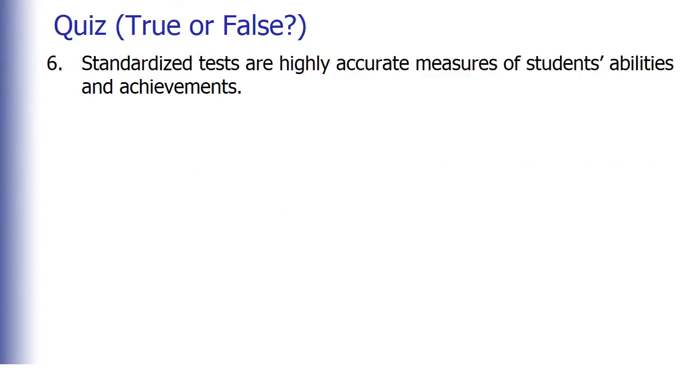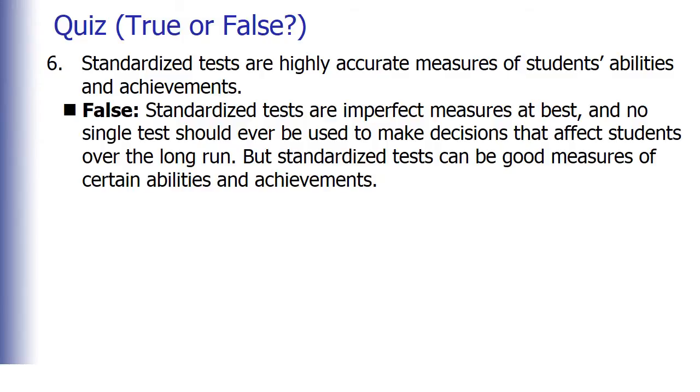And finally, number six: standardized tests are highly accurate measures of students' abilities and achievements. This is false because standardized tests are imperfect measures at best and no single test should ever be used to make decisions that affect students over the long run. But standardized tests can be good measures of some abilities and achievements.